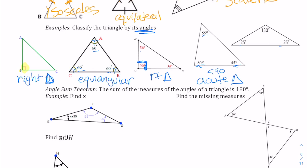Here we've got 25, 25, and 130. These two angles are acute — the 25s are acute — and then the angle is 130, which is obtuse. So if you have one obtuse angle, this is an obtuse triangle.